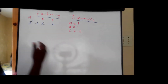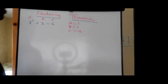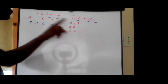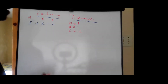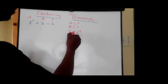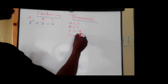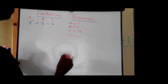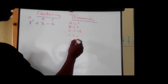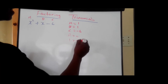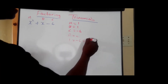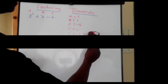So now we know the value of A, B, and C. Therefore, I am going to multiply A times C. So the value for A is 1, and the value for C is negative 6. 1 times negative 6 equals...